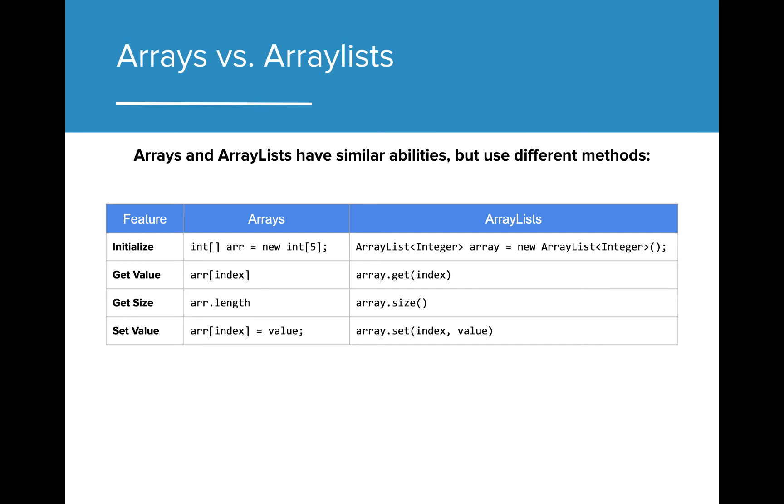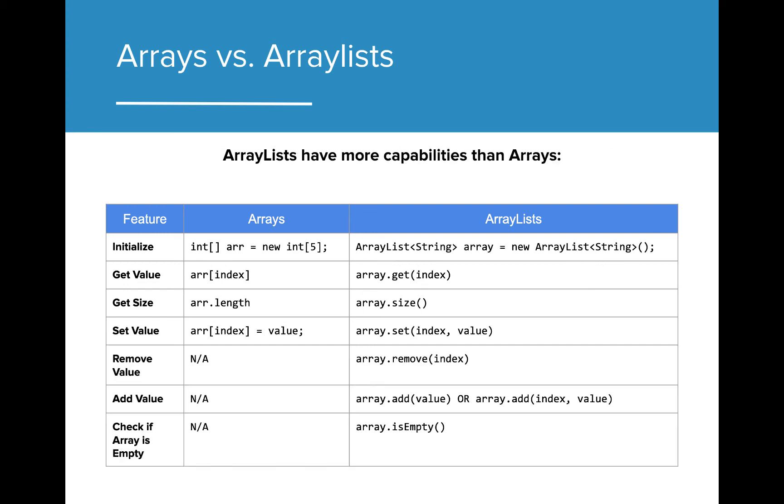You may have noticed that the methods associated with ArrayLists are very similar to that of arrays. In this table, you can see that Arrays and ArrayLists share a lot of the same functionality across the two data structures. What sets ArrayLists apart is the fact that they can manipulate the size of the data structure using the remove and add methods. These provide ArrayLists with more flexibility if the data that you are using fluctuates in size frequently.